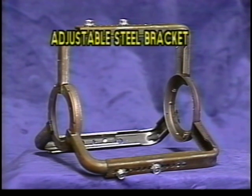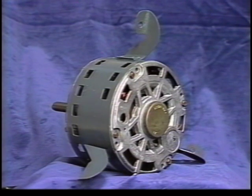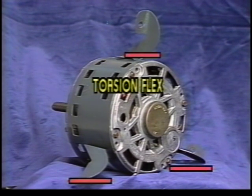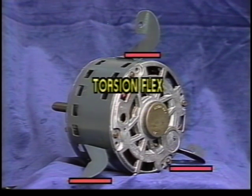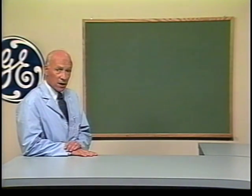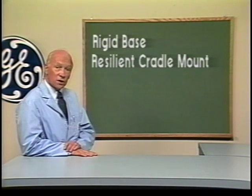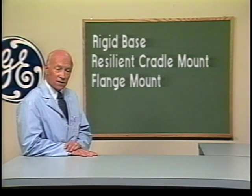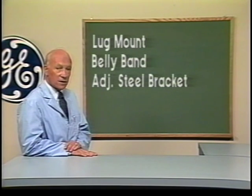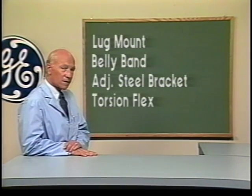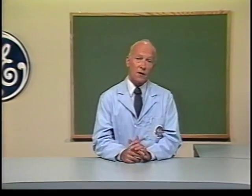Next is the adjustable steel bracket mount, which can be adjusted to accommodate different motor lengths. Finally, there is the torsion flex mount, which consists of three specially designed welded steel arms. The special steel and shape of the arms provide superior vibration and noise isolation, and also provide for a quick and simple installation. The eight types are: rigid base, resilient cradle mount, flange mount, extended through bolt, lug mount, belly band, adjustable steel bracket, and torsion flex.